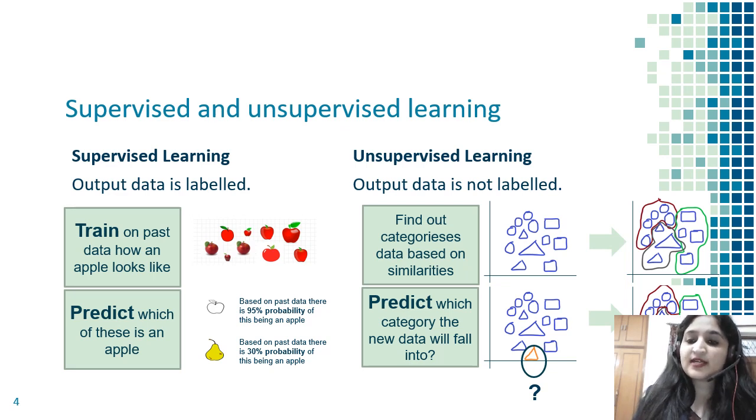In unsupervised learning, output data is not labeled. For example, I'm a company that makes soaps. I want to know which are the different target segments that buy my soap so I can make different strategies for them. I don't know the outputs - I don't know how many target segments I'll get and what these target segments look like. That's why output data is not labeled. The machine will try to make categories on its own, understanding which type of objects are similar in nature and clubbing them together.